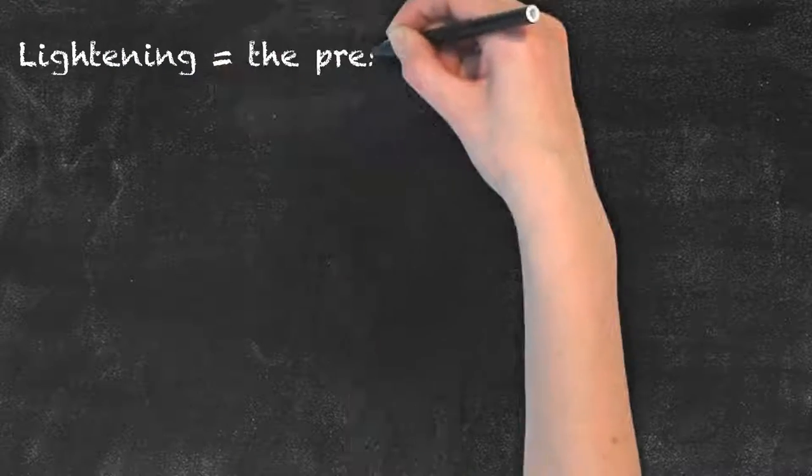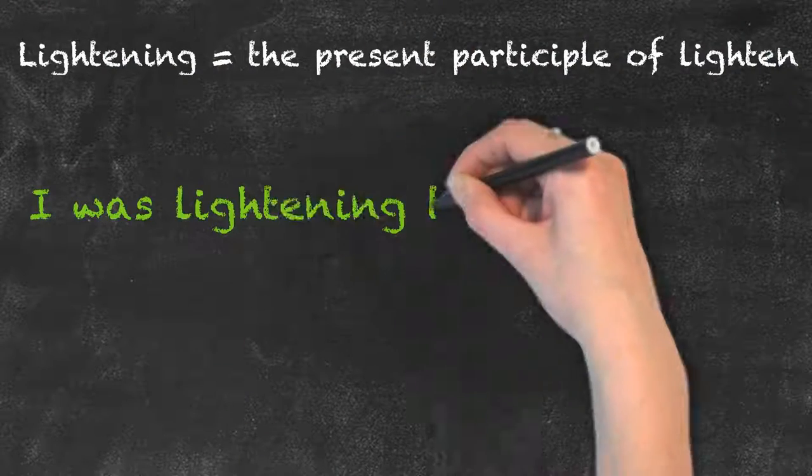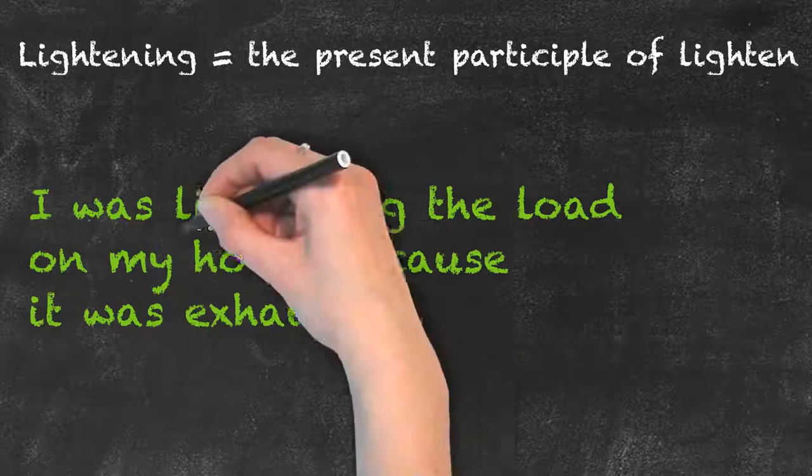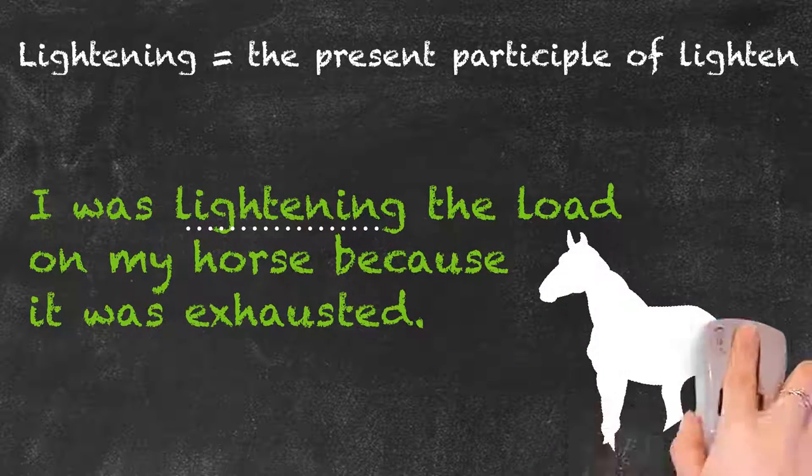Lightening is the present participle of to lighten. We can, for example, say I was lightening the load on my horse because it was exhausted.